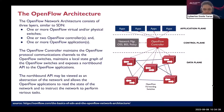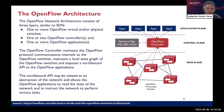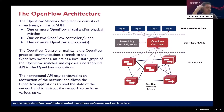To give some perspective: Northbound here pertains to the communication from the controller plane going up to the application plane, whereas the Southbound is the communication going down from the controller to the forwarding switches. The Northbound API may be viewed as an abstraction of the network and allows the OpenFlow applications to read the state of the network and to instruct the network to perform various tasks. Applications that want to utilize the SDN environment can do so through the OpenFlow protocol, either enabled or coded via an API.